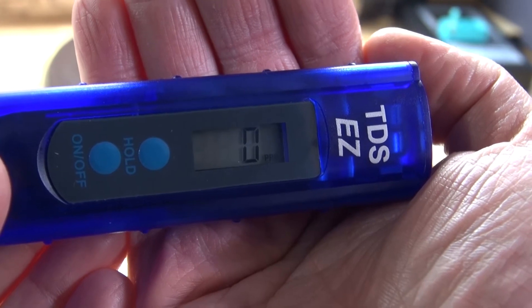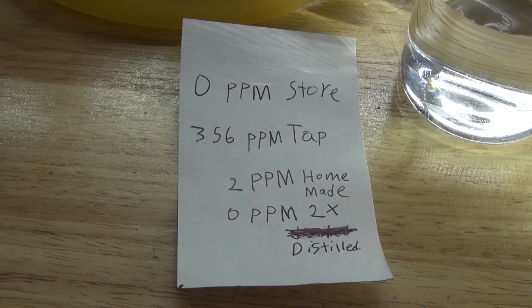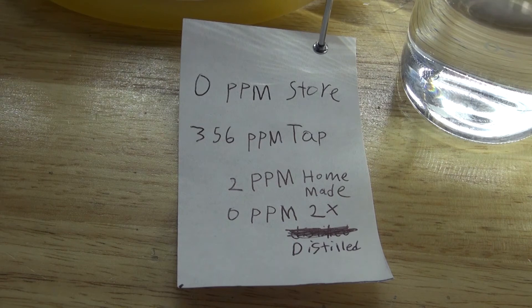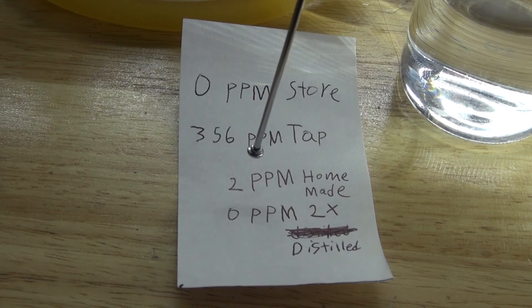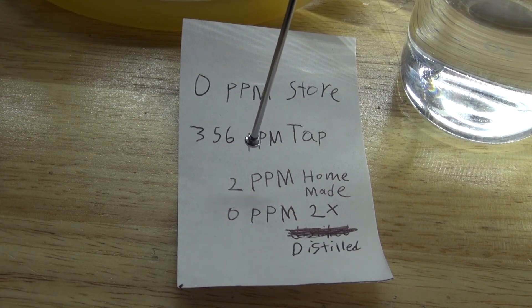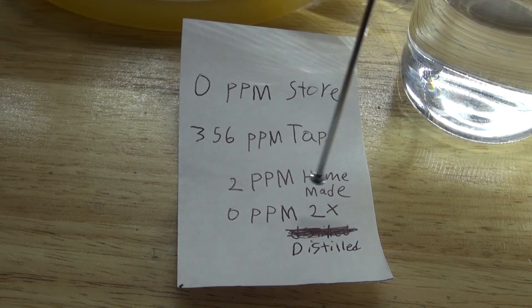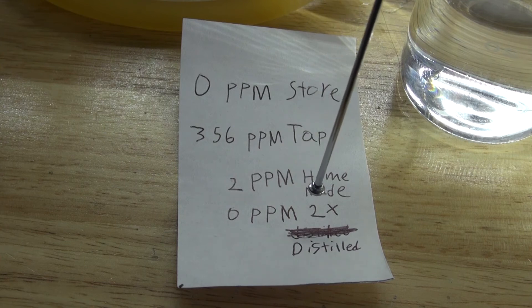Here are my final results. 0 parts per million from store brand. 356 parts per million from my tap water. Distilled once, it became 2 parts per million. Distilled a second time, it became 0 parts per million. As you can see, making double distilled water from your tap can equal what you would buy in the store.